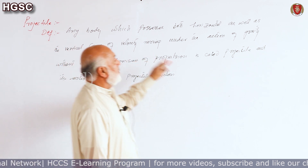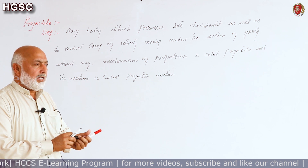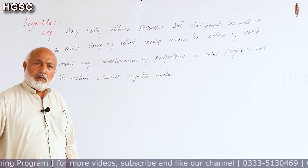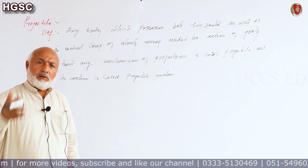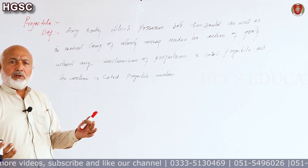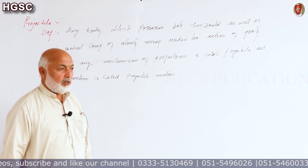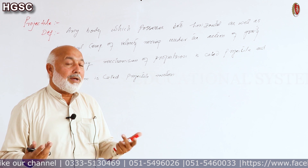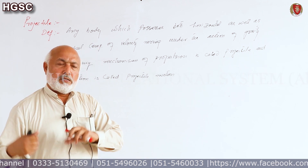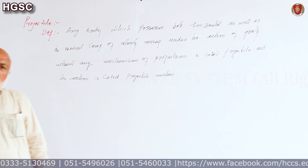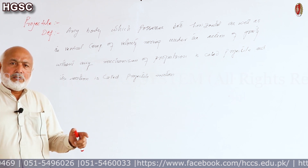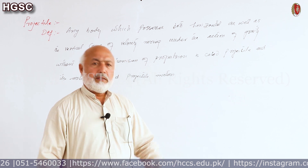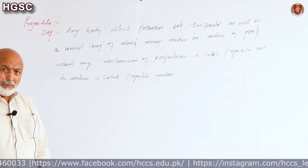The most important condition is without any mechanism of propulsion. So if we fire a missile, we cannot call it a projectile because it has fuel inside. An airplane taking off from a runway has engines and fuel, so even if it has both horizontal and vertical velocity, we don't call it a projectile. However, a bullet fired by a gun — which has both forward and vertical velocity and no mechanism of propulsion after the initial impulse from the gun — is called a projectile. Similarly, a football or volleyball kicked or hit by a player, or a cricket ball hit by a batsman, can all be called projectiles since they have no mechanism of propulsion.